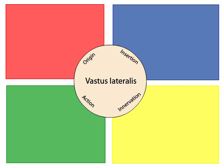Test your memory by moving your mouse pointer over the words in the circle, revealing the origin, insertion, action, and innervation of the muscle. When you've finished, click Next to continue.